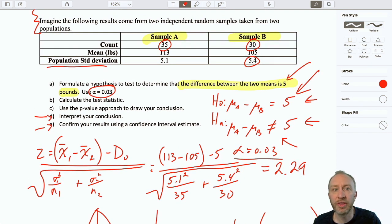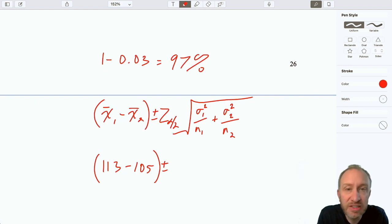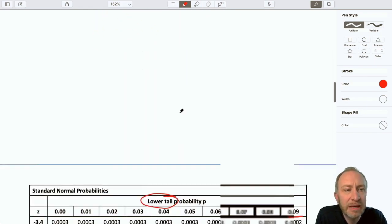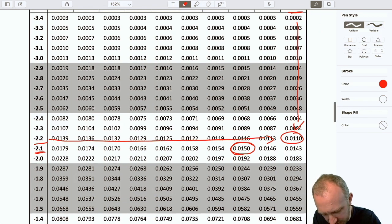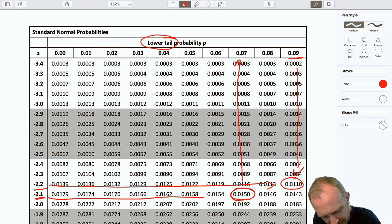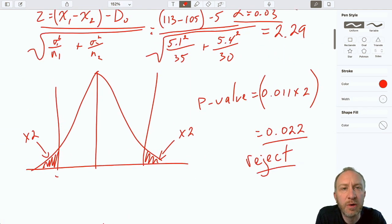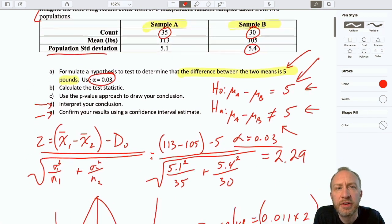And, here I can input our numbers. So, my sample means are 113 and 105. That critical value, alpha divided by 2, this one I don't know off memory. That's going to be 0.015, because alpha was 0.03. So, when I go down to the tables, I'm looking for 0.015. And so, here I find it right there. So, that critical value is going to be 2.17. So, I come back up here, I have 2.17. And now our standard deviations, 5.1 and 5.4. And our two sample sizes, 35 and 30.